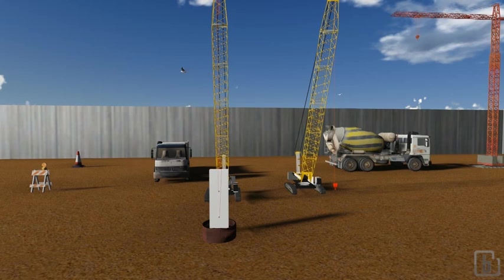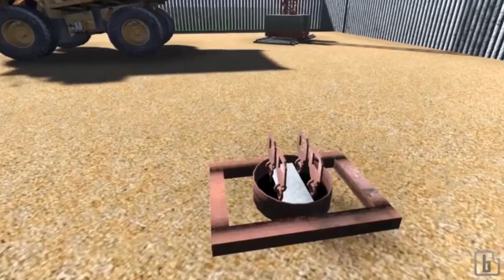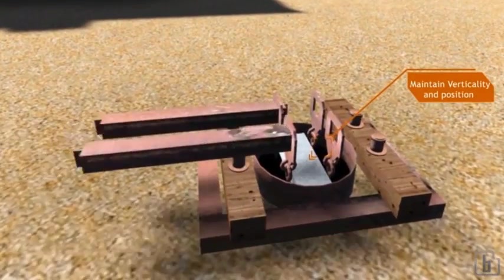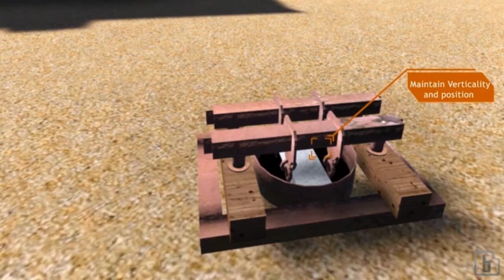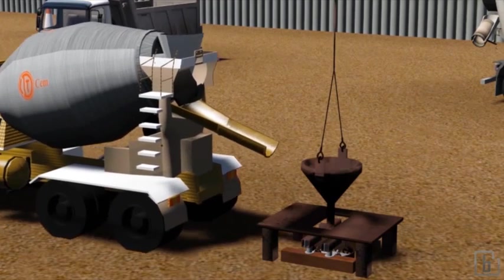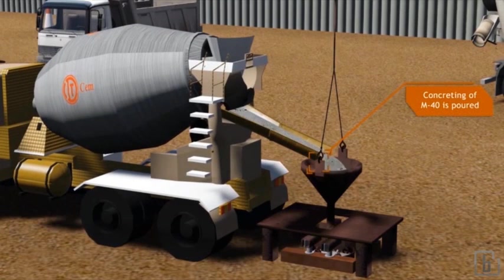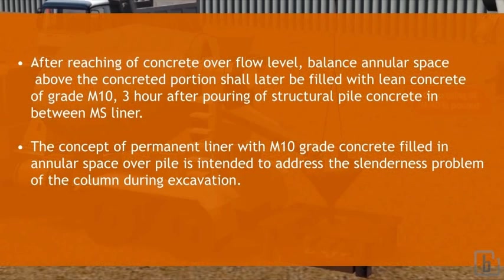Concrete of M40 will be poured up to a specified height of column/pile as shown in drawing from bottom to have a proper fixity at bottom. The concrete will be poured up to the pile cut-off level plus additional overflow level shown in the drawing. The level of the concrete will be ascertained by lowering cup fitted with reinforcement steel. After reaching of concrete overflow level, balanced annular space above the concreted portion shall later be filled with lean concrete.